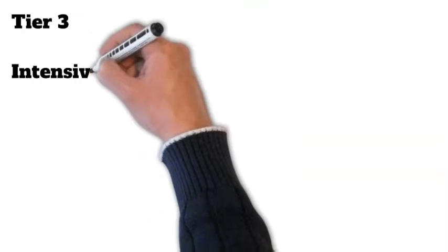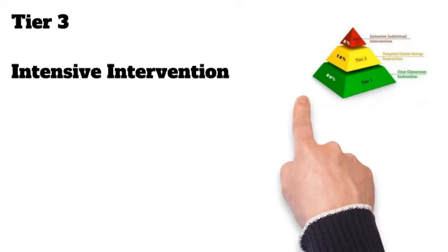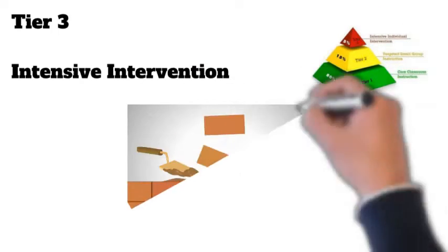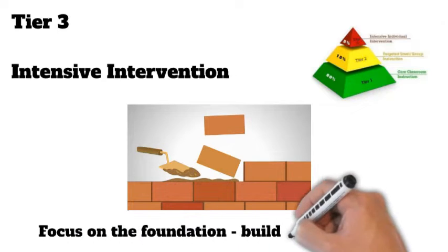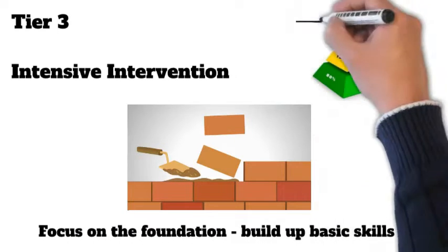The final level is called Tier 3 or Intensive Intervention. These interventions are for students who are not progressing even with Tier 2 interventions. These students are often more than one grade level behind in their learning.